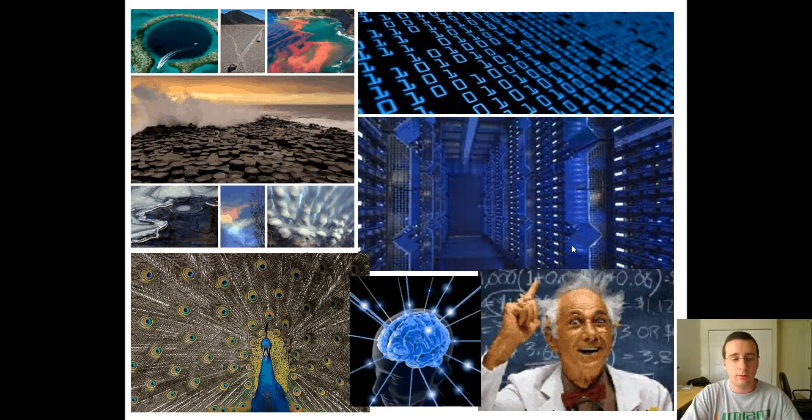For example, you see the peacock here on the bottom left. It seems random the way that his coloration pattern, his plumage works. But if you actually look at it carefully, you will see that there's a pattern and there's actually a process by which this pattern is established. It's a biologically, genetically based process that interacts with the environment to form a unique plumage that's unique to this peacock but yet follows some set of rules.